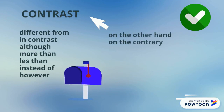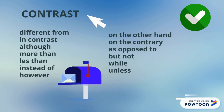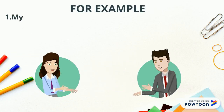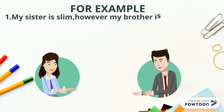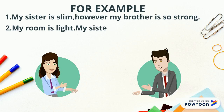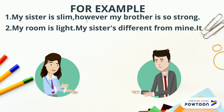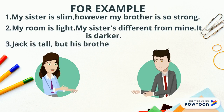Contrast signal words include: more than, less than, instead of, however, on the other hand, on the contrary, as opposed to, but not. For example: my sister is slim, however my brother is so strong. My room is light, but my sister's room is different from mine — it's darker. Jack is tall, but his brother is taller than him.